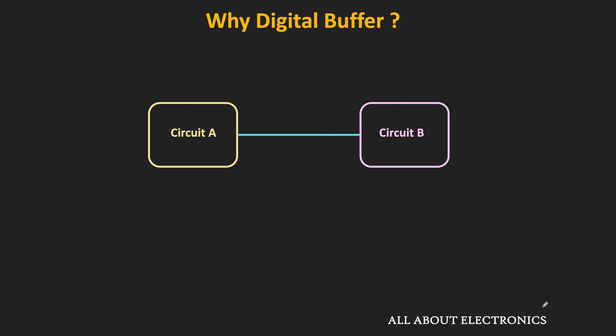If we just directly connect the two circuits, then we may not get the desired output. Let's say we have one circuit A, and the maximum current provided by this circuit is equal to 10 mA. It needs to be connected to circuit B whose input impedance is equal to 250 Ohm — let's say we want to drive multiple LEDs. Whenever the output of circuit A is equal to 5V, the current drawn by circuit B is 5V divided by 250 Ohm, that is equal to 20 mA. As you can see, it is more than the maximum current which can be supplied by circuit A. So in that case, loading will occur and the logic high will not reach the second circuit.